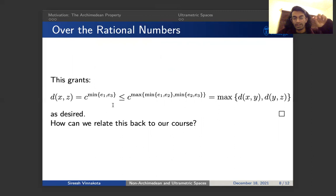you can pull out a minimal, you can only pull out the smaller of the two exponents, right? So E1 or E3. And of course, this minimum is less than or equal to the maximum of the minimums. So that gives us exactly what we want with the ultrametric inequality. So how can we relate this back to the course? We've kind of gone through a bunch of definitions. So what was really the point of doing all this?